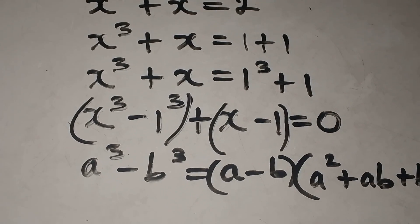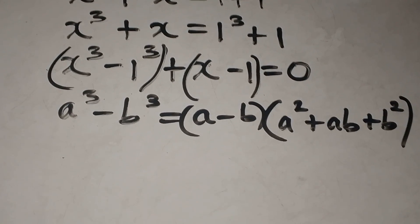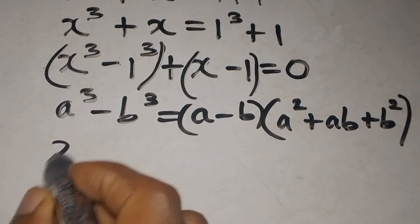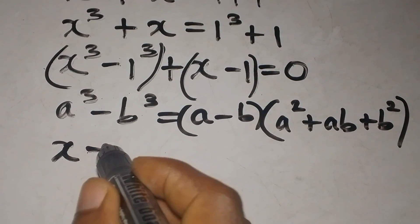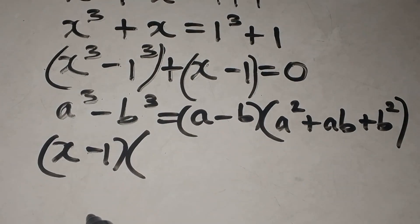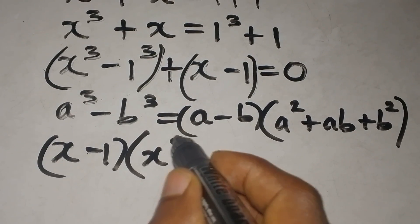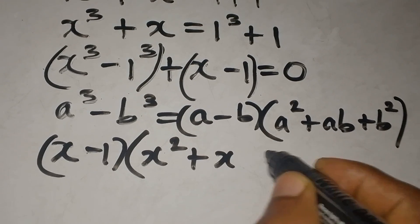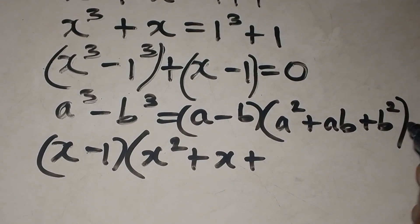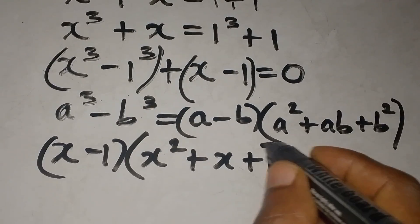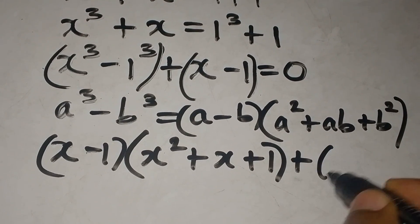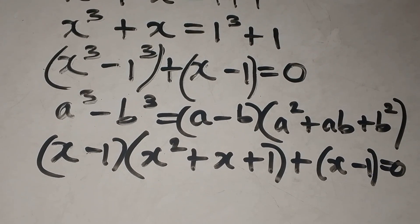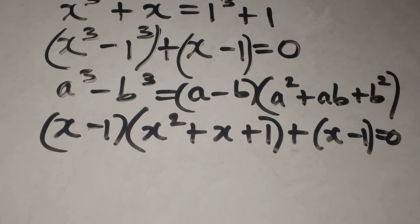So our a is x and b is 1. We write x minus 1, then times a squared which is x squared, plus ab which is x times 1 giving x, plus b squared which is 1 squared giving 1. Then we add the remaining plus x minus 1, and equate everything to zero.